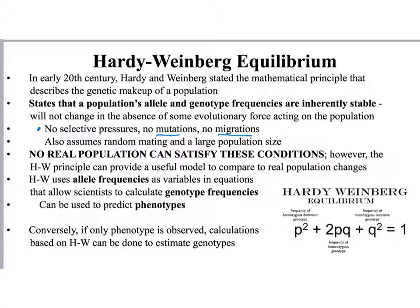Additional conditions for Hardy-Weinberg equilibrium include no migration or gene flow between populations, random mating where no individual has any advantage in finding a mate or reproducing, and a large population size. These are very unrealistic expectations for any natural population, making it incredibly unlikely to find a real population that satisfies all these conditions and remains in equilibrium for any significant length of time.